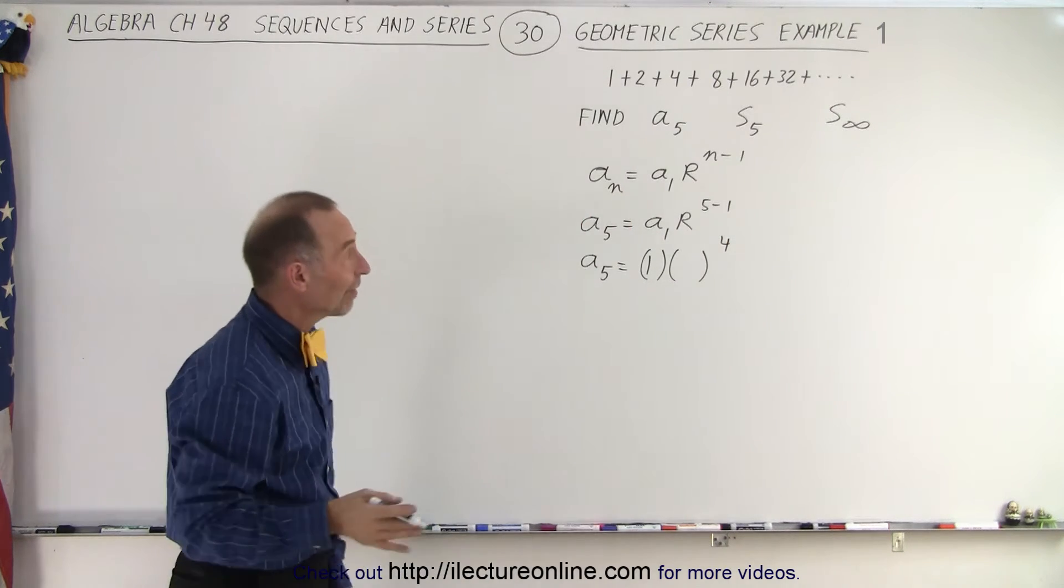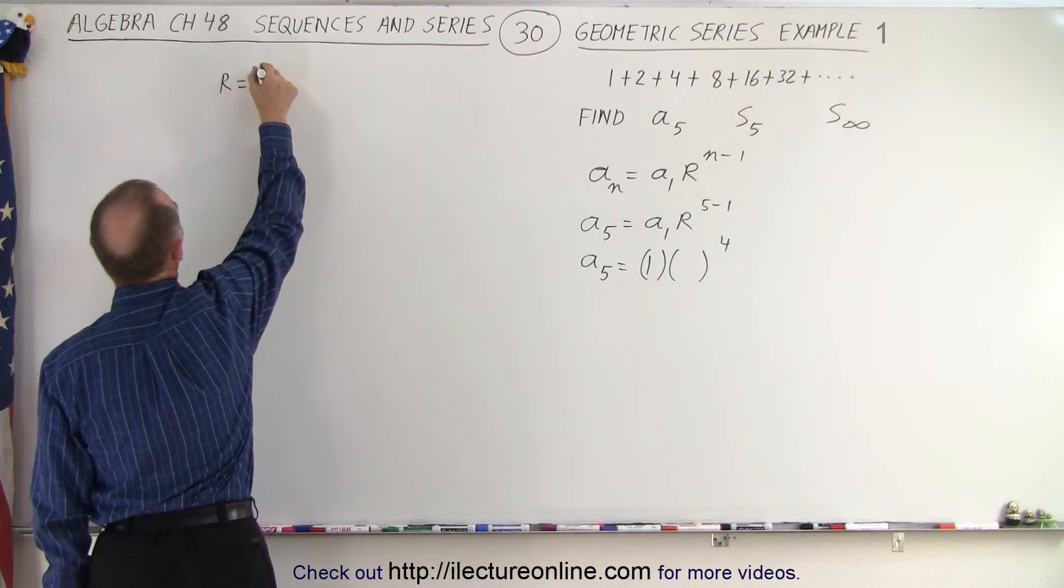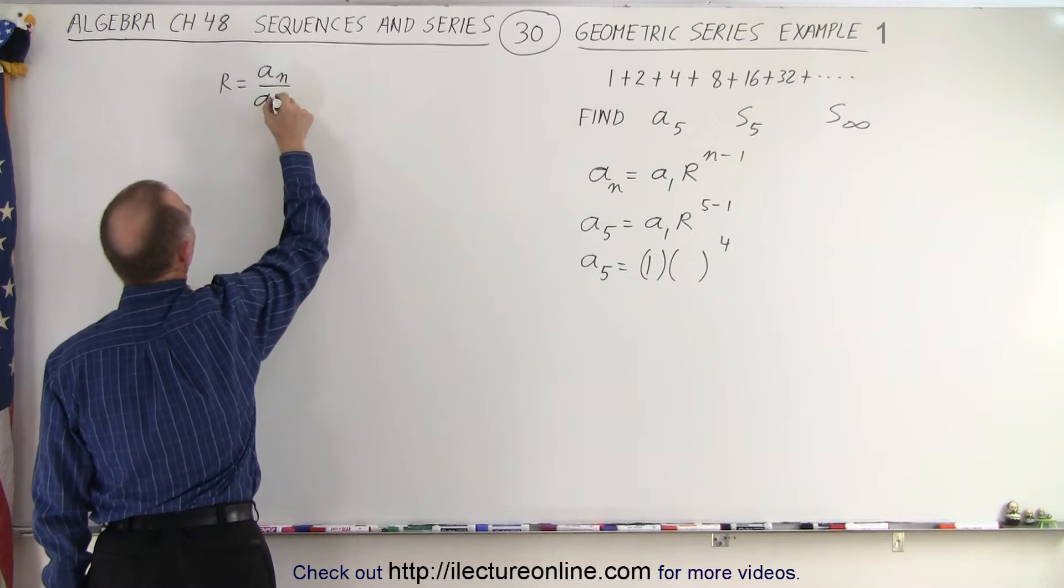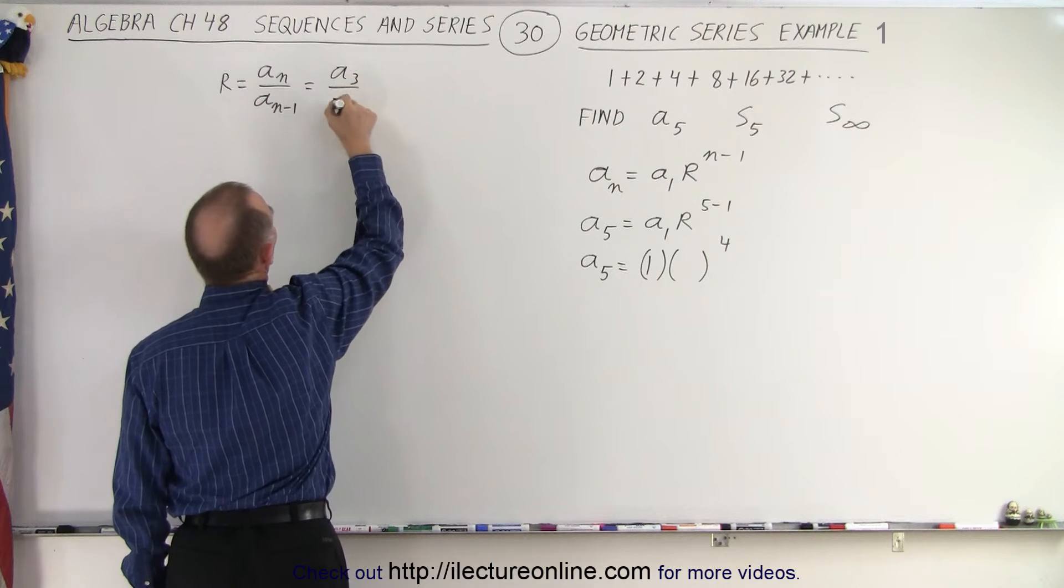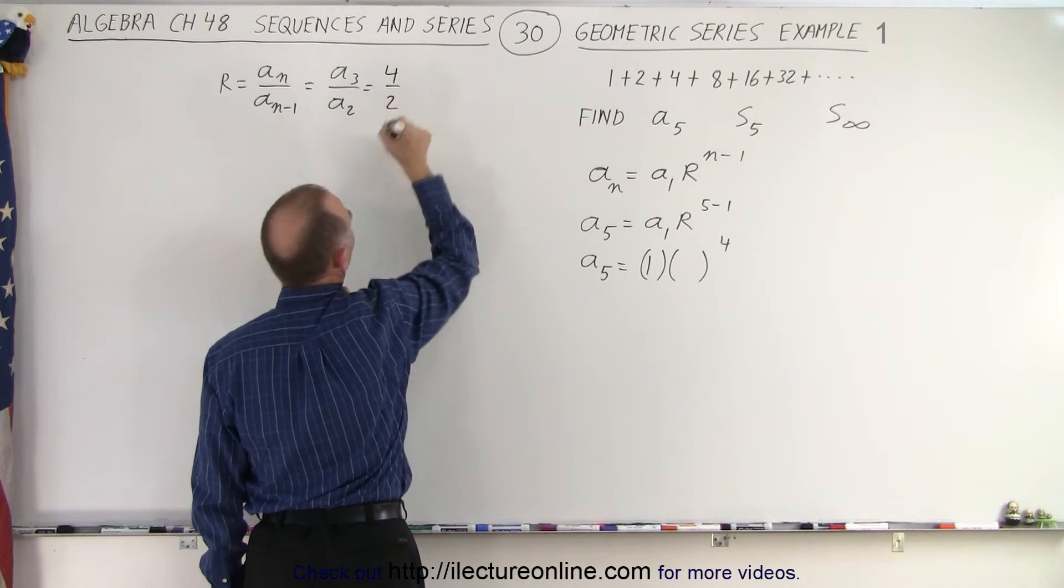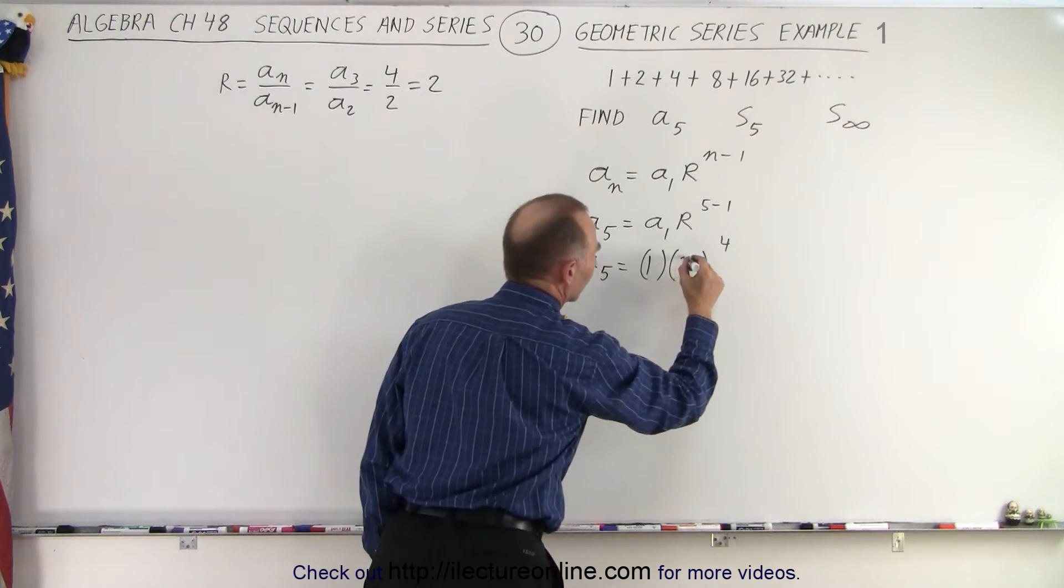Now you see that we also need to find the common ratio. The common ratio R can be found by taking any one of the terms and dividing it by the previous number. In this case, let's pick the third one divided by the second one, which is 4 divided by 2. So the common ratio equals 2.